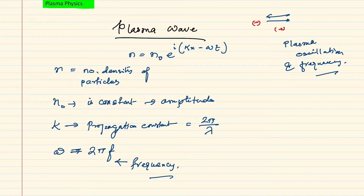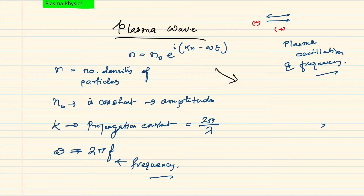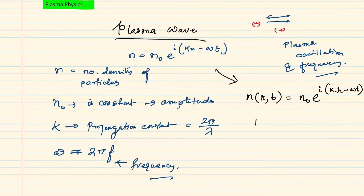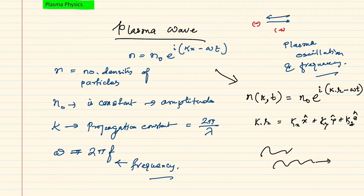Now, if you write this equation in 3D, then n is a function of space and time, so we write n(r, t) = n-naught e to the power i(k·r minus omega t). In 3D, k·r is represented as kx x-cap plus ky y-cap plus kz z-cap. When the wave is traveling along the x direction, we will consider the simplified equation.